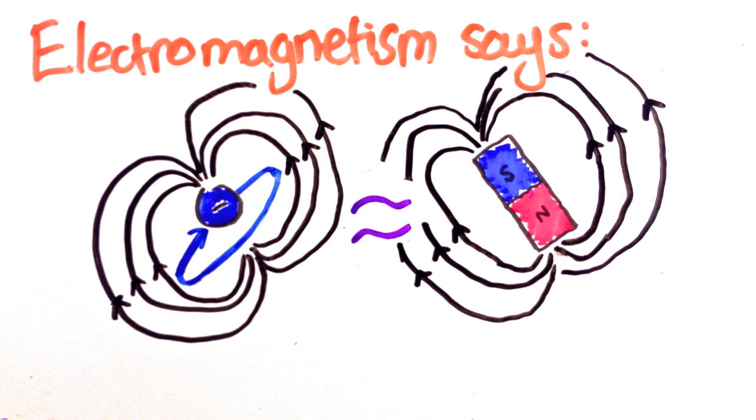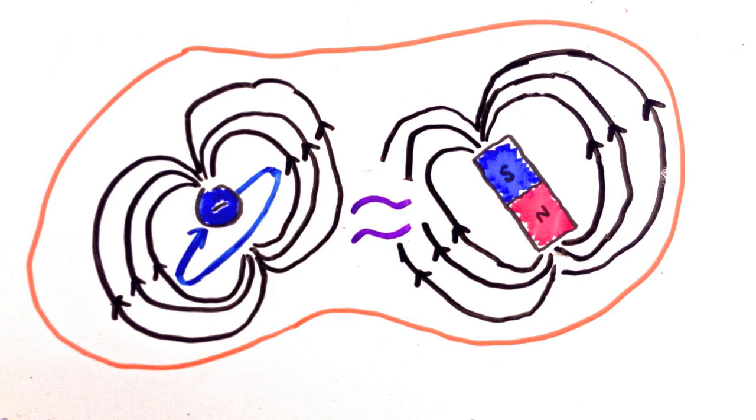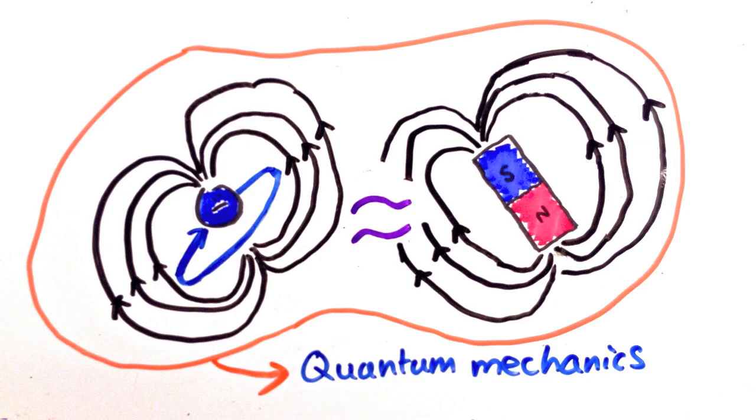So then we expect charged particles moving around in circles to act as little magnets. Since that's something we know from classical physics, it was built into quantum mechanics too from the start.